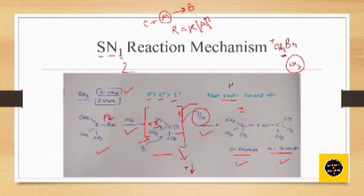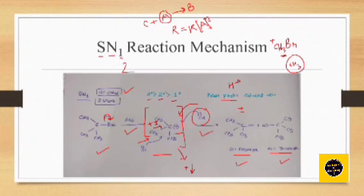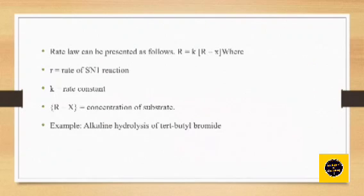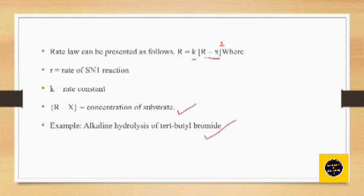Protic means a solvent like methanol or water that donates H⁺. This H⁺ stabilizes the OH⁻ anion, and the polar anion stabilizes the cation, so as both anion and cation get stabilized the SN1 reaction rate increases. The rate law is R = k[R-X], where R-X is the substrate and it is dependent on the first power — so it is a first-order reaction. A typical example is the alkaline hydrolysis of tertiary butyl bromide.